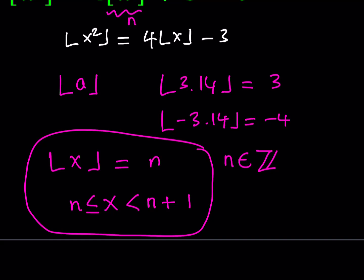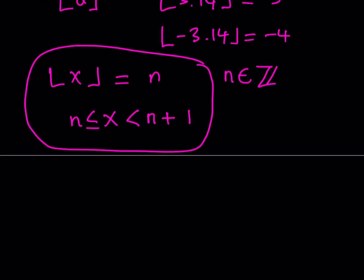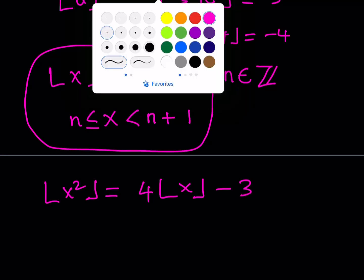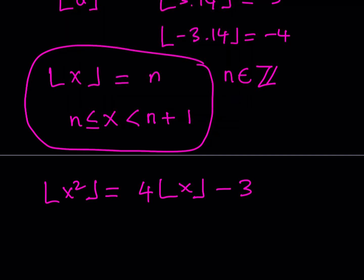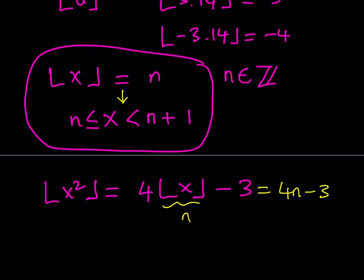After making this substitution, I can isolate the floor value of x squared again, which gives me 4 times the floor value of x minus 3. Since floor(x) equals n, the floor value of x squared is going to be 4n minus 3. And since n is an integer, 4n minus 3 is also an integer.